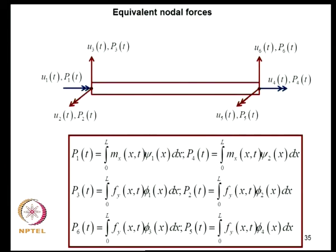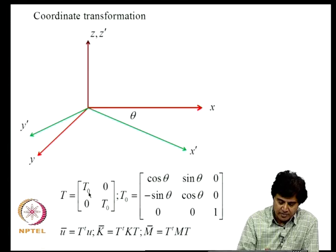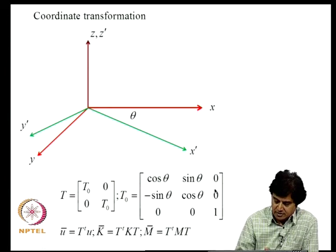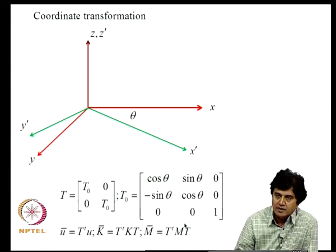For equivalent nodal forces: a distributed twisting moment MX gives couples P1 and P4 at the two ends, shear forces P2 and P3, and bending moments at the nodes. The coordinate transformation matrix from local to global has two 3×3 blocks of T₀, where T₀ = [cos θ, sin θ; −sin θ, cos θ] with a 1 on the diagonal for the out-of-plane component. The global matrices are K-bar = T^T·K·T and M-bar = T^T·M·T — similar to the planar beam element procedure.